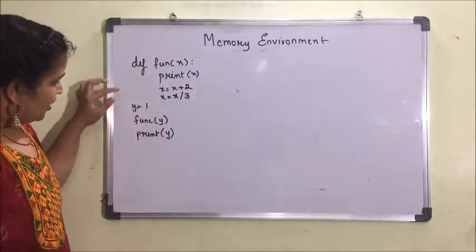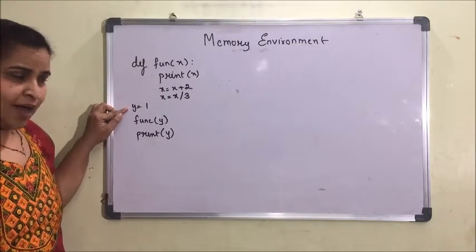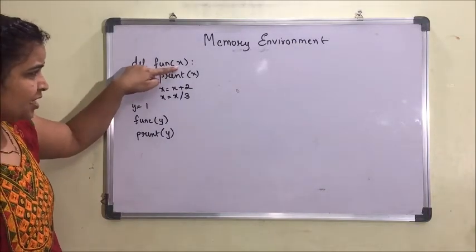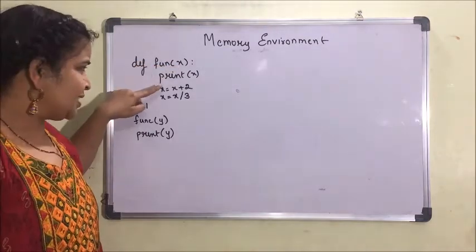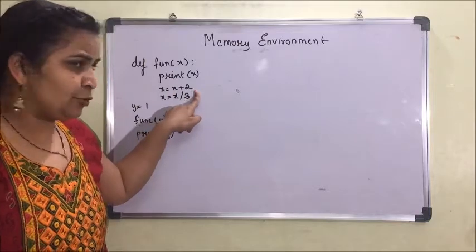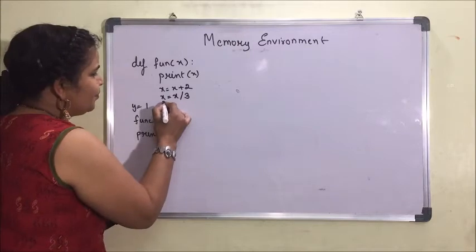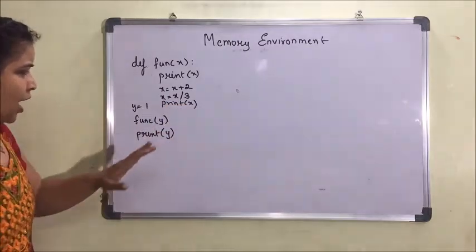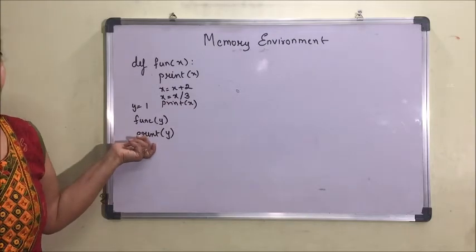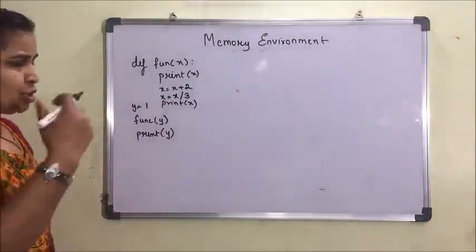This is a simple program where execution will start from a variable y and a function call is made. This function has a parameter x which will accept the value of y, print it, increment it by 2, then divide it by 3. You can also write a print statement to print x again. After that, control will go back and print the value of y.